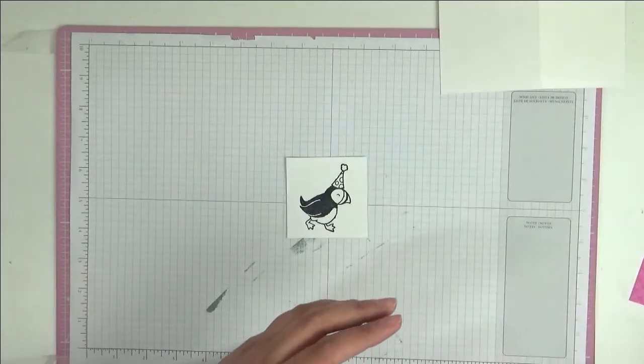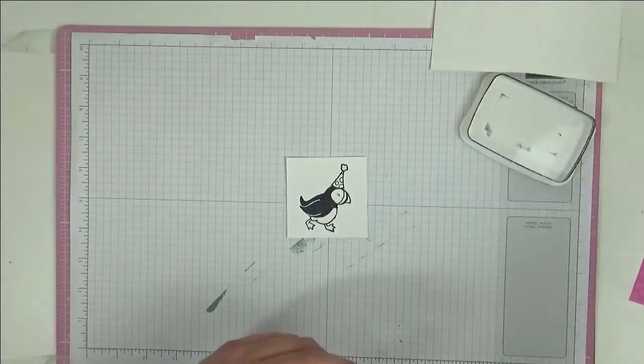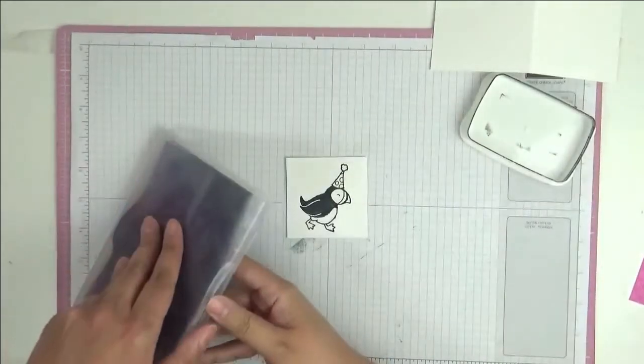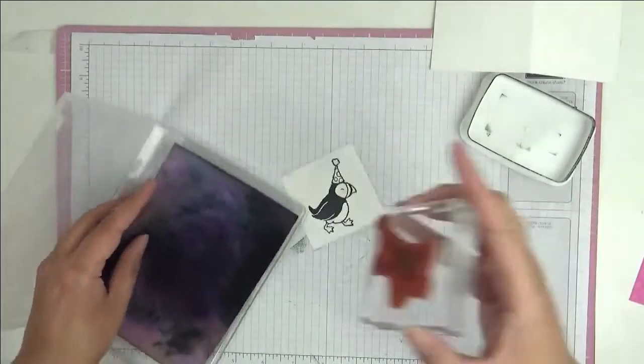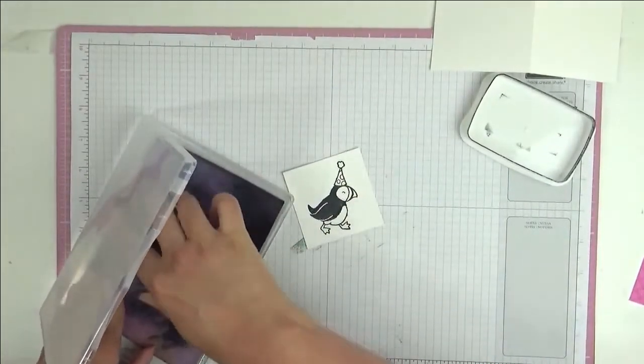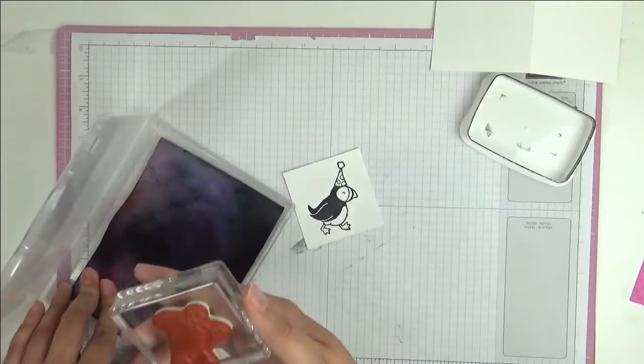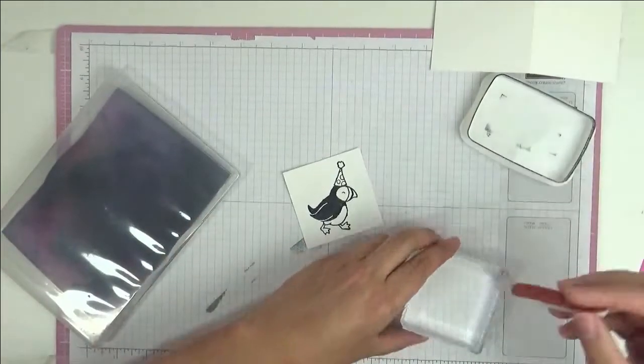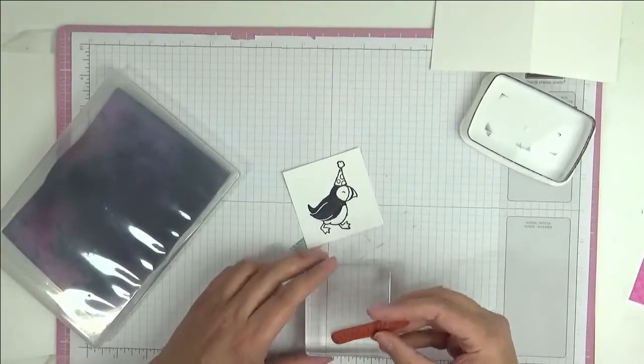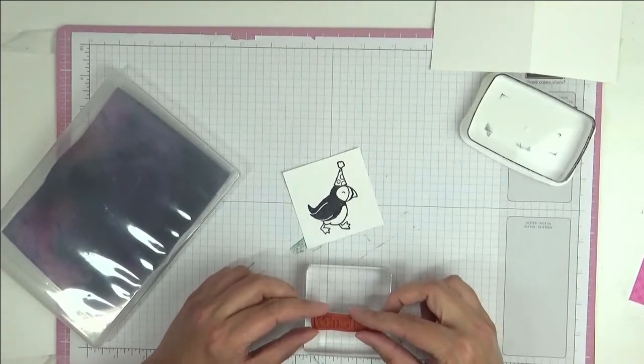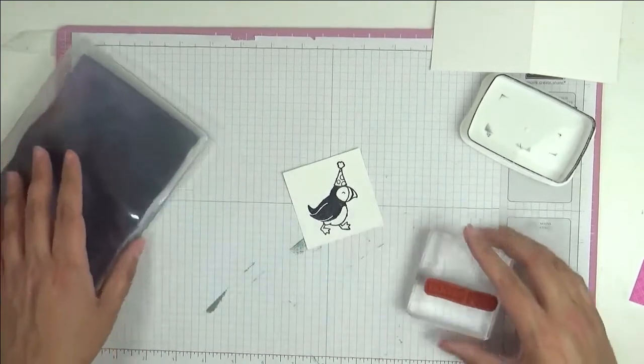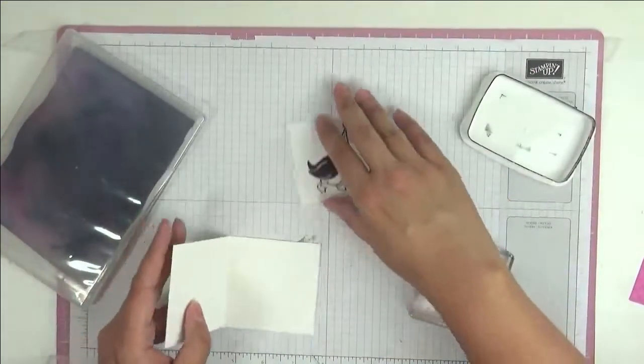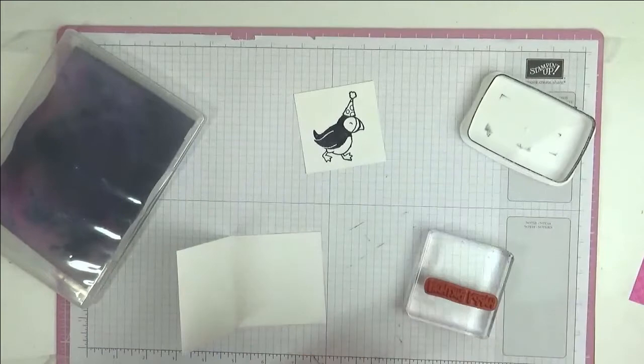So, I'm going to set this aside. Actually, I'm going to clean it off quickly. This is my simple chamois. Everything's falling everywhere today. I'm going to clean this off so I can take it off the block. And then I've got this sentiment that says Happy Birthday. I'm just going to put this on my block now. And I bring the inside of my card, and we're going to stamp this on the inside of the card.